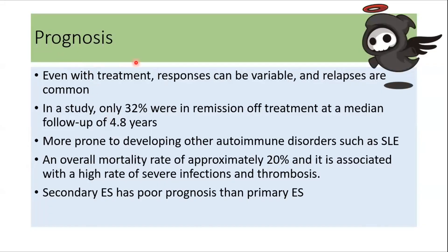Regarding prognosis, even with treatment, response can be variable and relapses are very common. In one study, only 32% of patients were in remission at a median follow-up of approximately 4.8 years. These patients are more prone to developing other autoimmune diseases like SLE. The overall mortality rate is approximately 20%, attributed mostly to severe infections and thrombosis. Secondary Evans syndrome has a poorer prognosis than primary Evans syndrome.